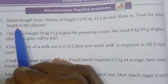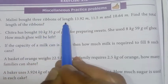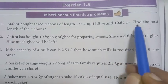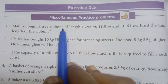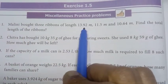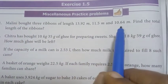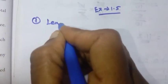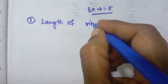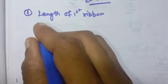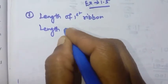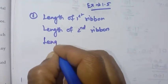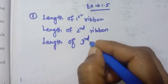First question: Malini bought 3 ribbons of length 13.92m, 11.5m and 10.64m. Find the total length of the ribbons. So we have three ribbons — first ribbon length, second ribbon length, third ribbon length — and we need to find the total length.